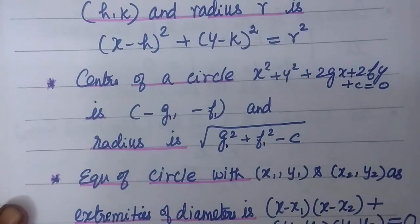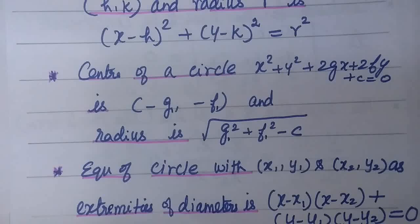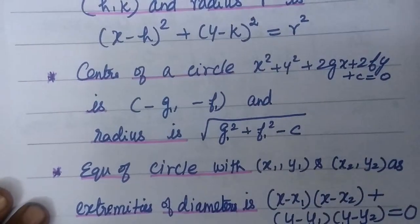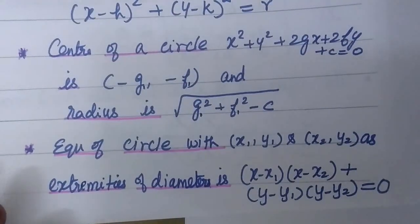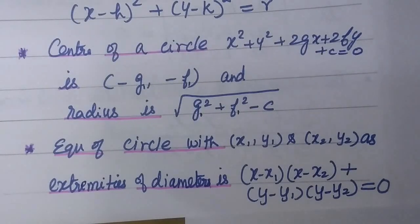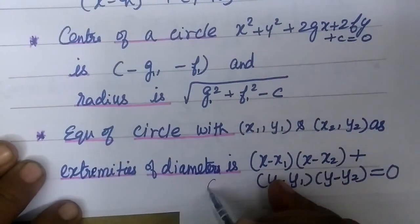Then the equation of a circle where one diameter is given — the diameter having end points (x1, y1) and (x2, y2). The equation is (x minus x1)(x minus x2) plus (y minus y1)(y minus y2) equal to 0.